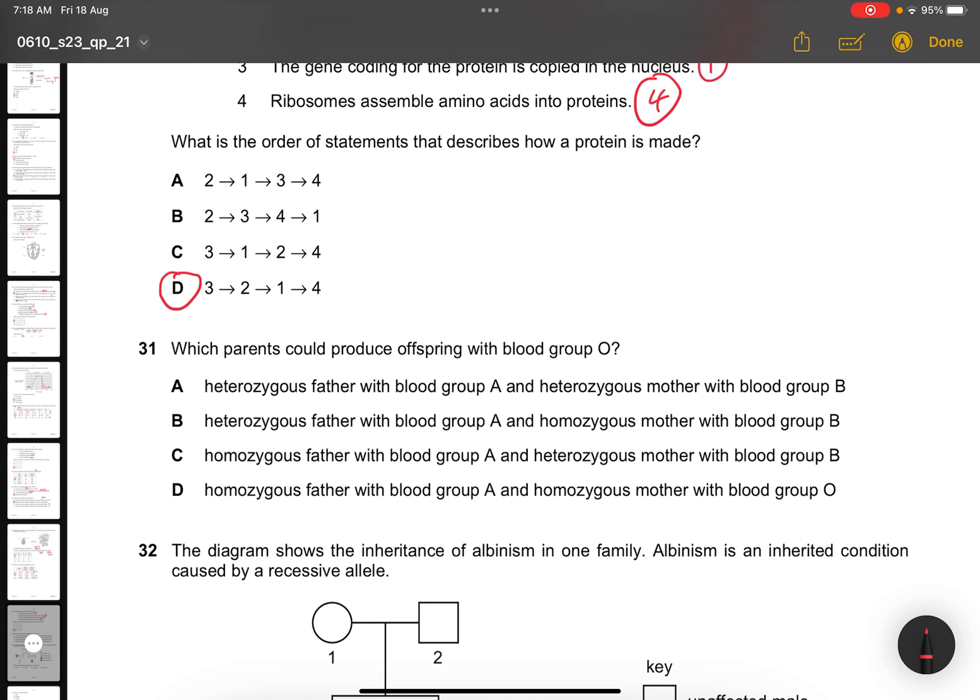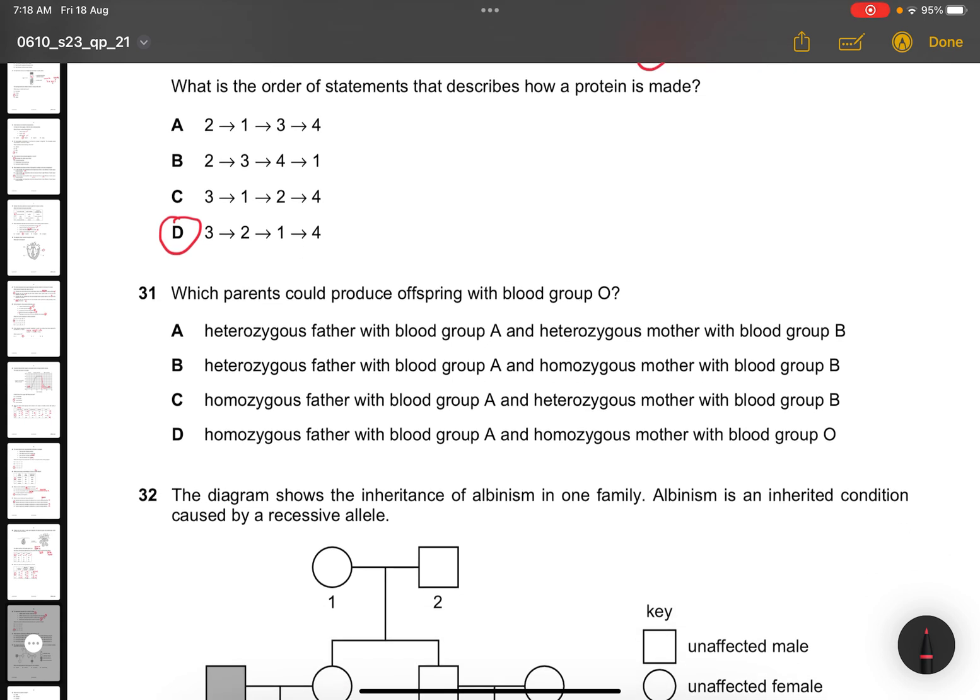Question 31. Which parents could produce an offspring with blood group O? When you see how you're going to produce a child with blood group O, it usually has to be heterozygous. So if I put AO and this is BO, for homozygous, homozygous is usually not possible. Let's remove those.